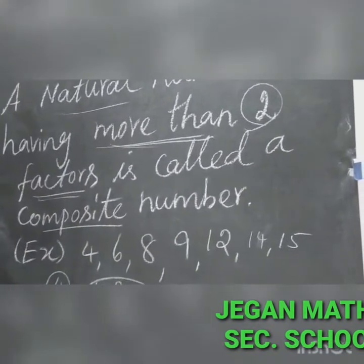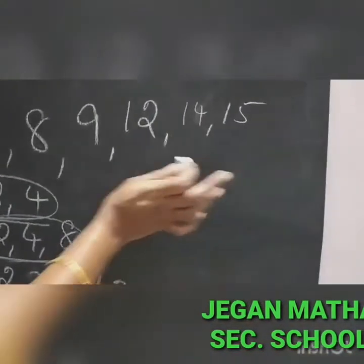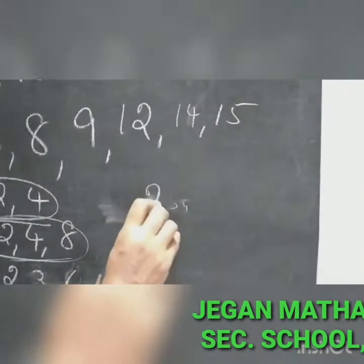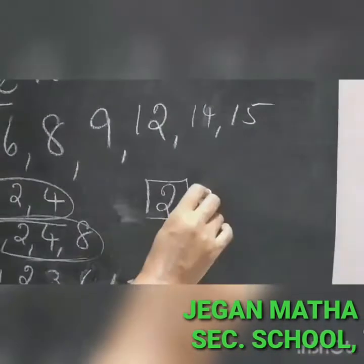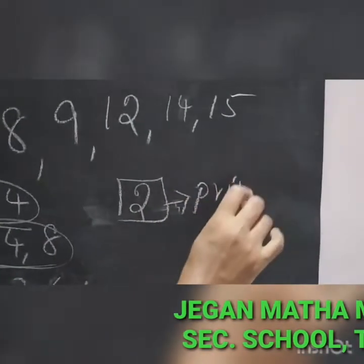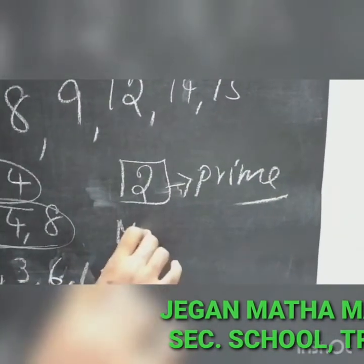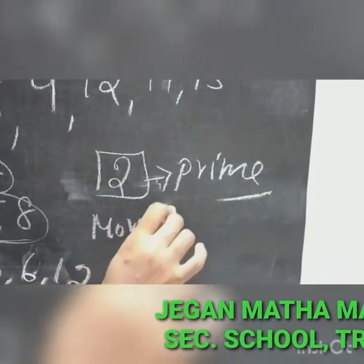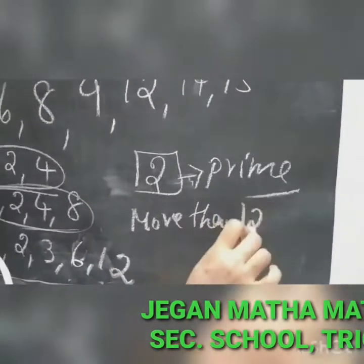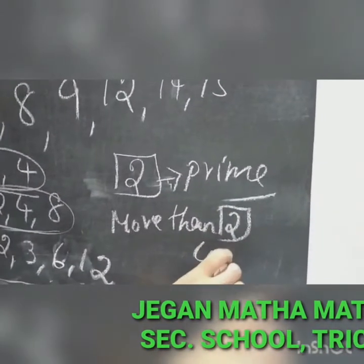To summarize: prime numbers have only 2 factors — 1 and the same number itself. Composite numbers have more than 2 factors.